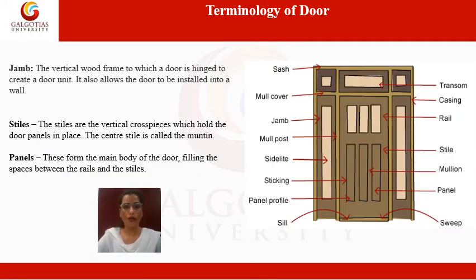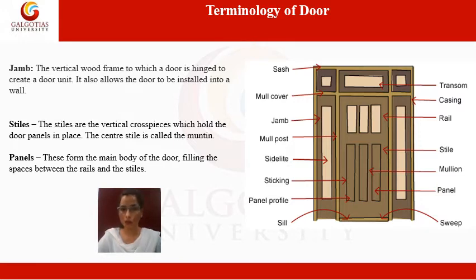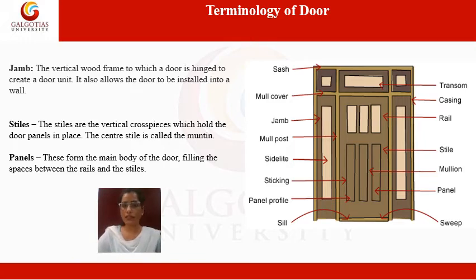The jamb is the vertical wood frame to which a door is hinged to create a door unit. It allows the door to be installed in the wall. The next term is the stile — the stiles are the vertical cross pieces which hold the door panel in place. The center stile is called the muntin.